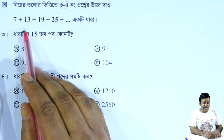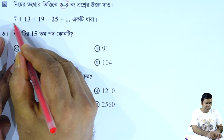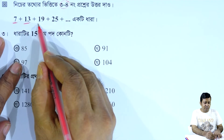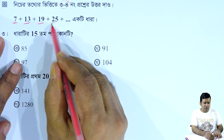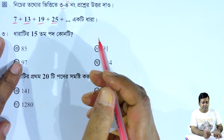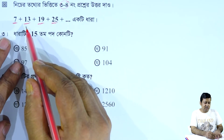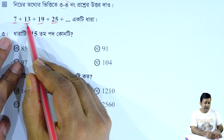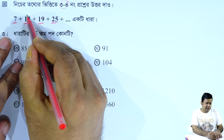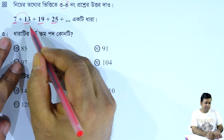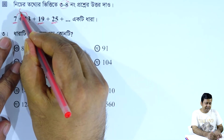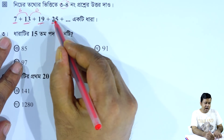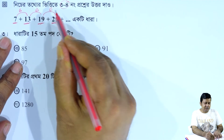The sequence is: 1, 3, 3, 3, 4, 5. Then 1, 3, 4, 5. Now, 19 minus 13 is 6. And 25 minus 19 is also 6.